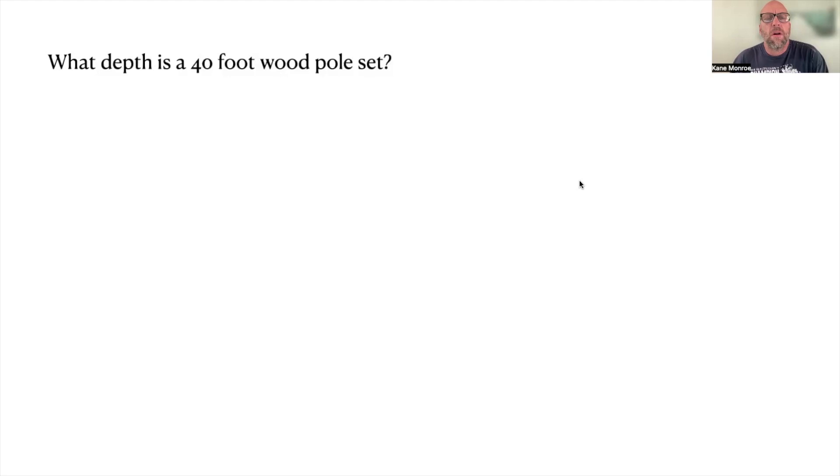Oh this is a good one. What is the depth of a 40 foot wooden pole? What depth is a 40 foot wooden pole set? That is an alignment's book and what it is, it's six feet. So it's 10% of the pole, 10% of the pole plus two feet. So you got to remember that, 10% of the pole would be four plus two would be six.